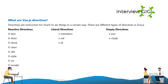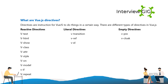What are Vue.js directives? Directives are instructions for Vue.js to do things in a certain way. There are different types of directives in Vue.js: reactive directives, literal directives, and empty directives.